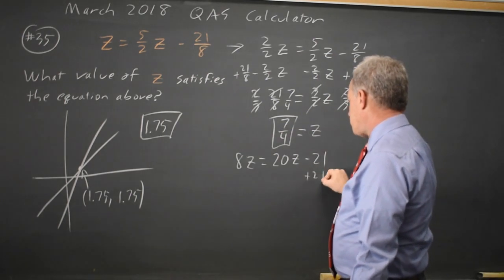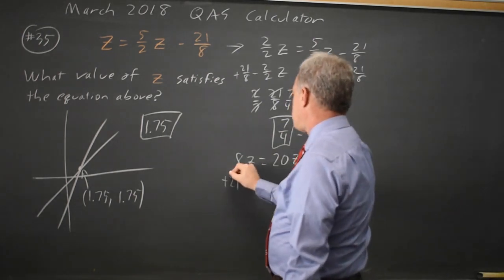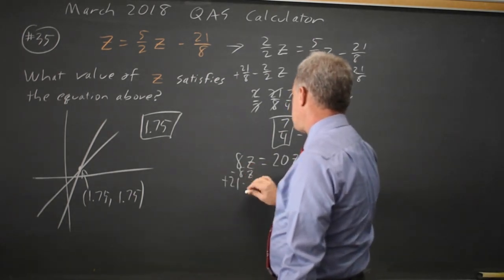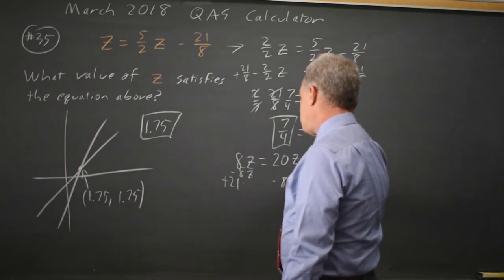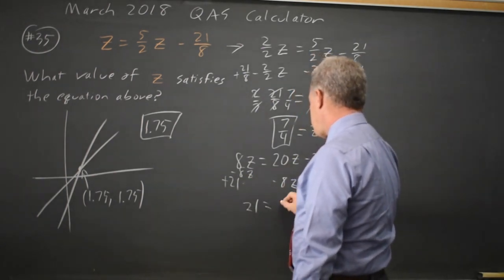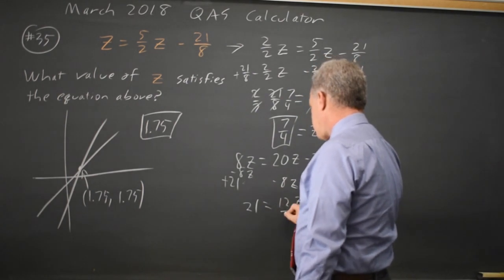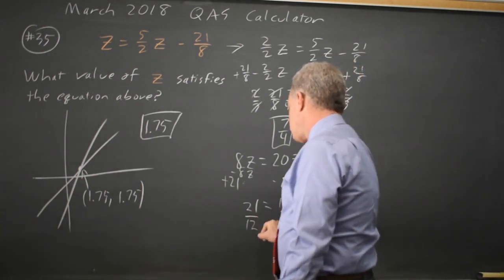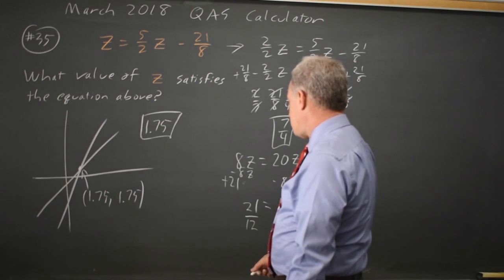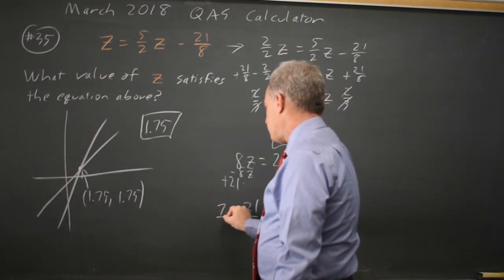Add 21 to both sides and subtract 8z from both sides. That leaves 21 equals 12z. Divided by 12, z equals 21 over 12, which is 7 over 4.